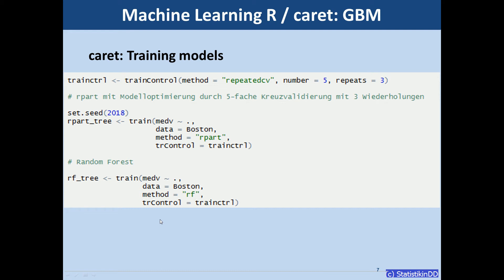Each tree is fit on a random sample of the data generated by bootstrapping. And the trick in random forests is that for each tree we do not use all the predictors to make splits but only a random subset of predictors.